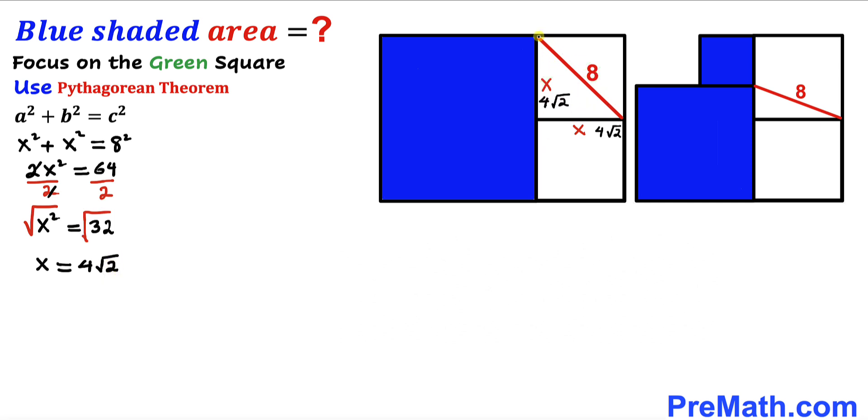Therefore, the side length of this white square is 4√2. Since these two squares are identical, this side length is also 4√2.